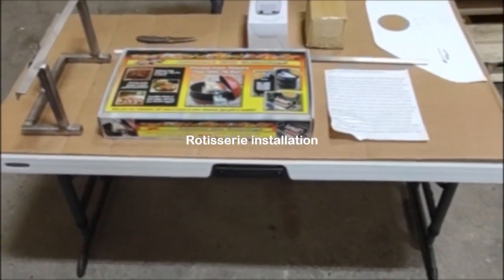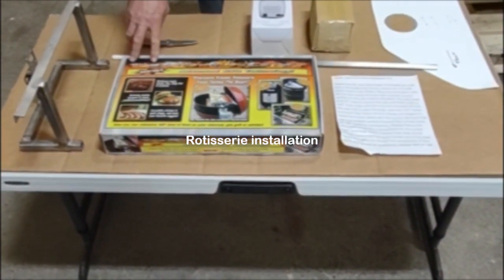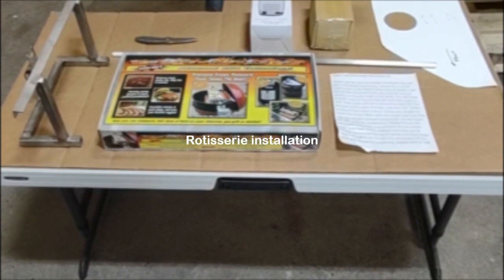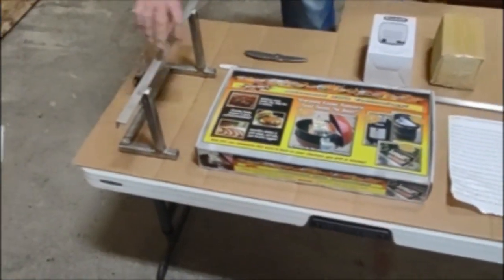When you're purchasing your rotisserie and ribulator from Gary's Barbecue Supplies, these are the things you're going to get. You're going to get your holder for the rotisserie. It goes right in here.